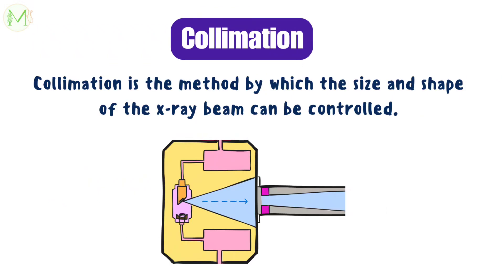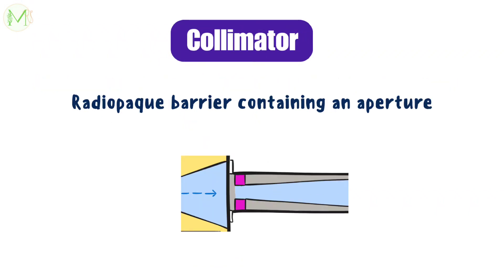What do collimators actually do? Collimation is the method by which the size and shape of the X-ray beam can be controlled. Collimators are radiopaque barriers containing an aperture in order to control the size and shape of the X-ray beam.